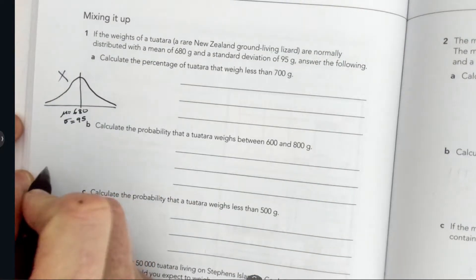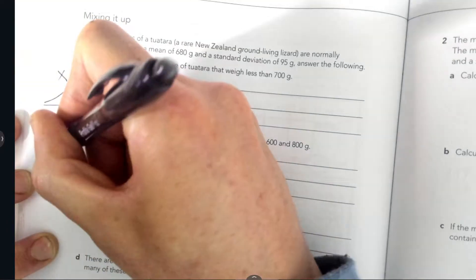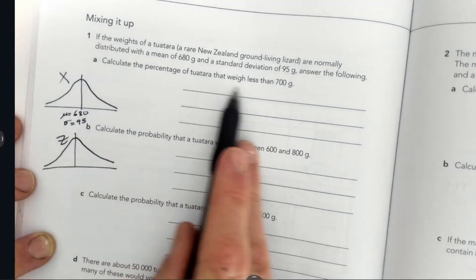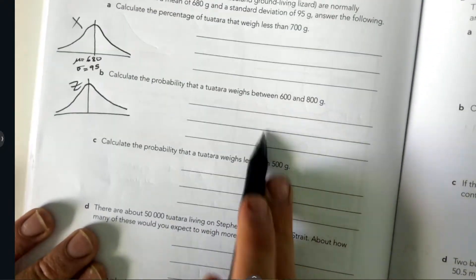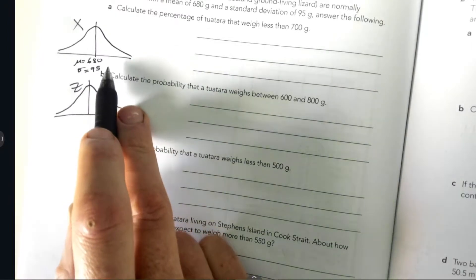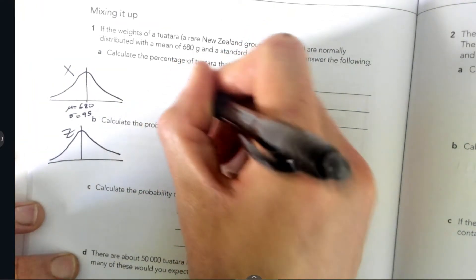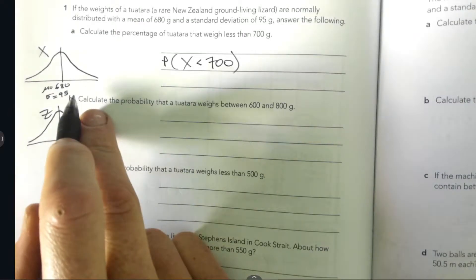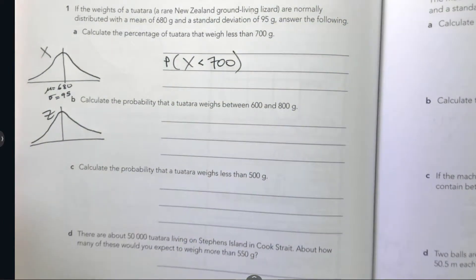I like to have X ready to go and it's probably a good idea to have Z but you may be at the stage where you don't really need to draw the Z. Calculate the percentage of tuatara that weigh less than 700 grams. We're gonna be doing all sorts of tuatara questions so you might not want to corrupt your picture, so you can start utilizing this sort of writing: P(X < 700).